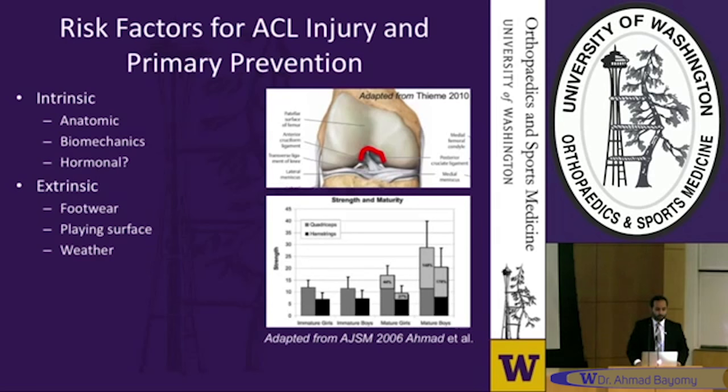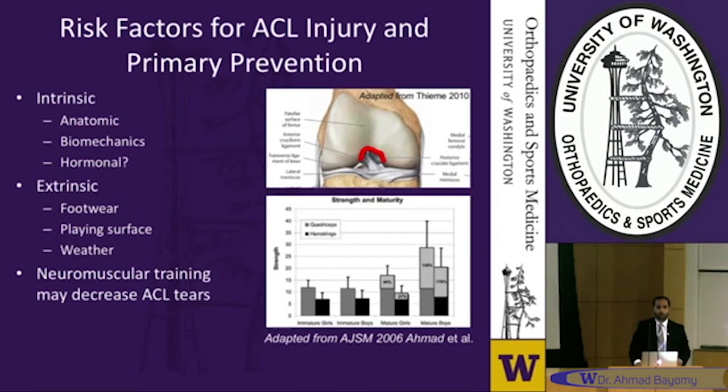To address some of these factors, there's been a push to increase neuromuscular or proprioceptive training for athletes, with the goal of decreasing the rate of tears. This has shown some success, particularly in female college athletes. But in a recent meta-analysis, the improvement is less significant, and the jury's still out.